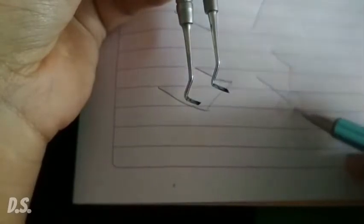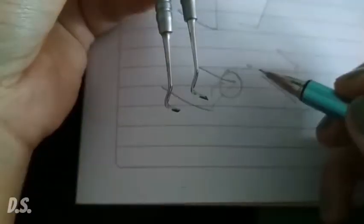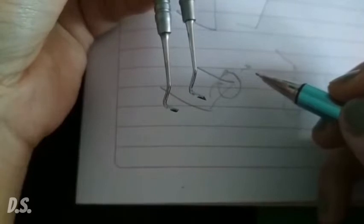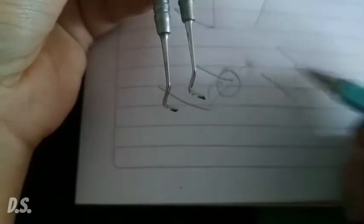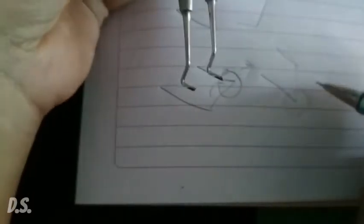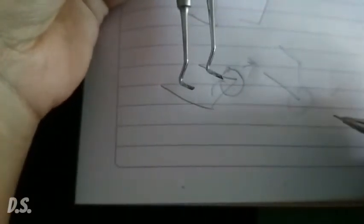One is facing towards me with a sharp pointy edge, and one is facing towards the side. The one that is facing towards the holder is the distal, and the one that is facing towards the side is mesial.